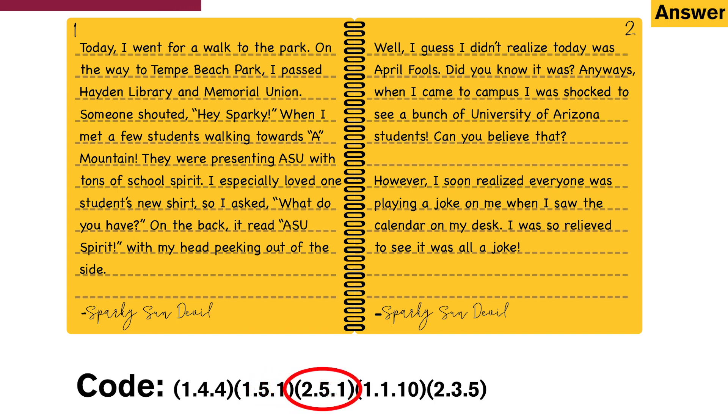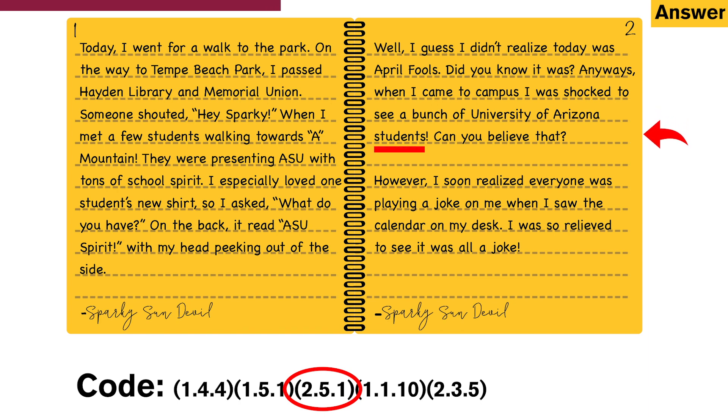Now the third code: 251 — second page, fifth line: 1, 2, 3, 4, 5. First word: students.